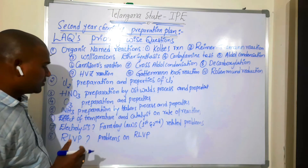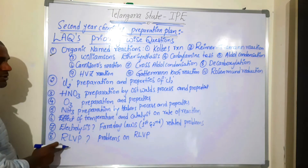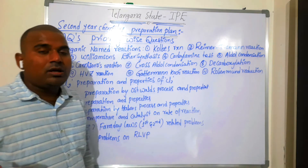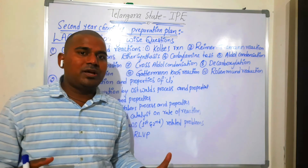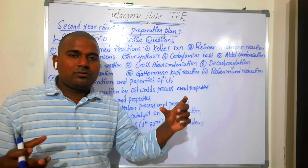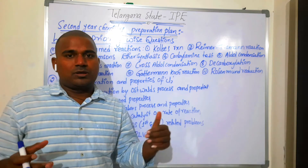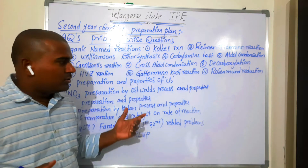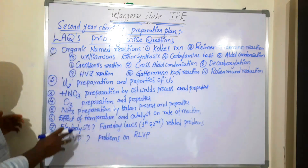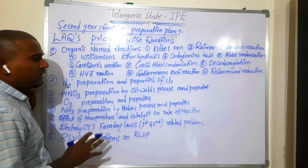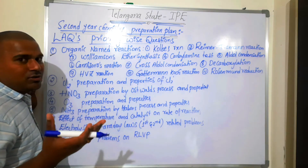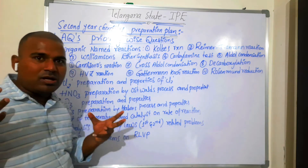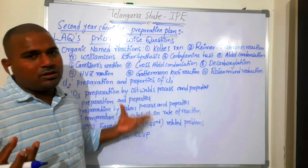Next is what is RLVP (Relative Lowering of Vapour Pressure) and related problems on RLVP. If you define the RLVP properly, you will be able to answer well. These are called 8-mark questions — 8 questions, 8 marks each, 16 marks total around the same way. If you concentrate on your calibre and memory power, you can answer these 8 questions well.